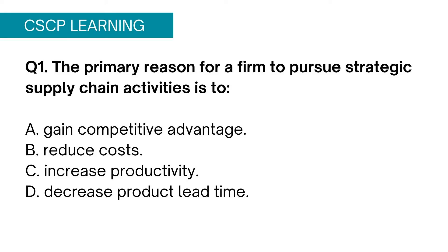Let's begin with question 1. The primary reason for a firm to pursue strategic supply chain activities is: Option A, gain competitive advantage; Option B, reduce cost; Option C, increase productivity; Option D, decrease product lead time.